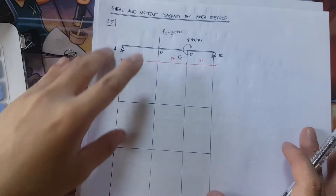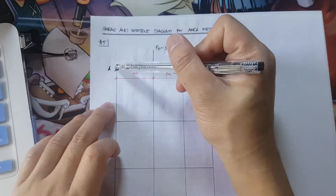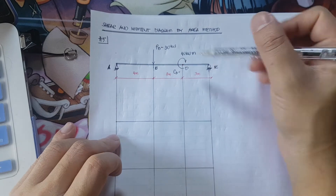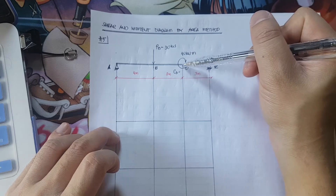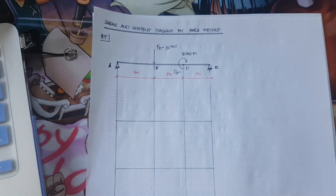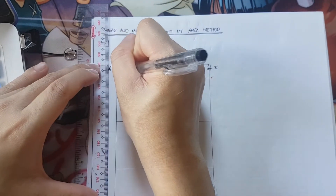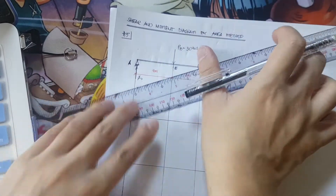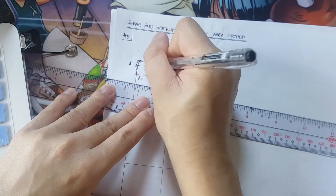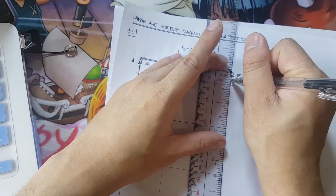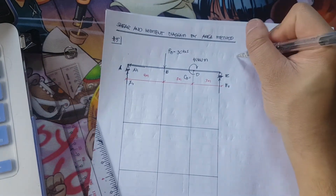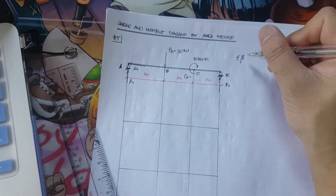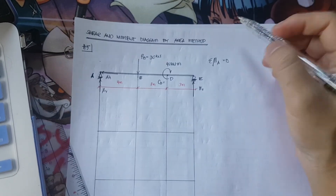Let's apply that using a new example. We have a simply supported beam with a pin at A and a roller at E, a downward force of 50 kilonewtons, and a moment of 40 kilonewton-meters at point D. We need to draw the free body diagram of the reactions. Since it's a pin, we have two reactions: vertical and horizontal. Since it's a roller, we have only one vertical reaction.